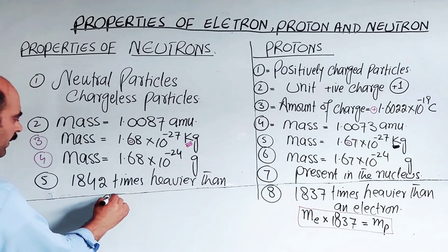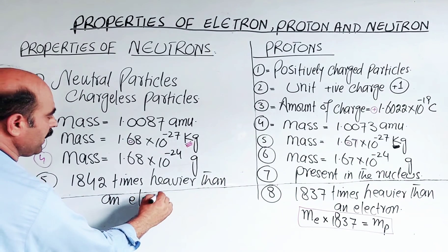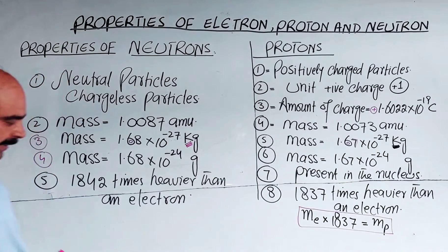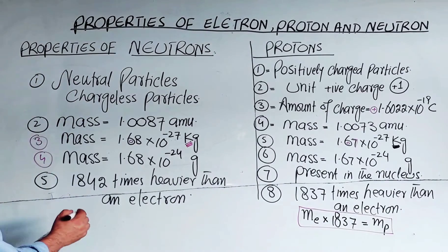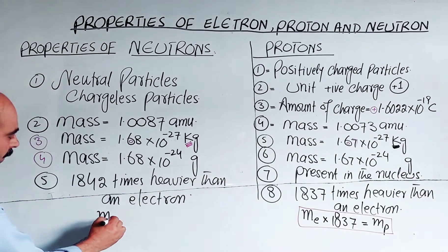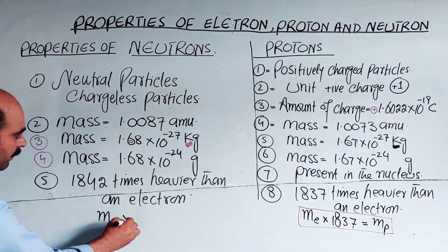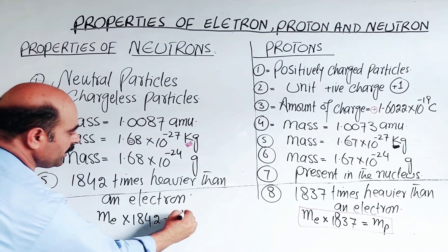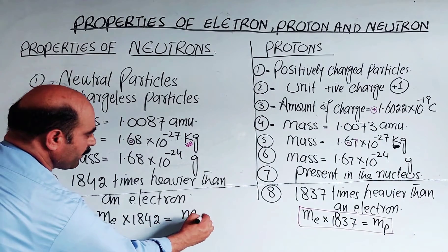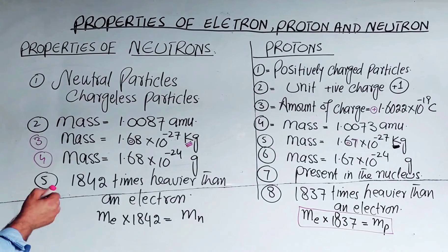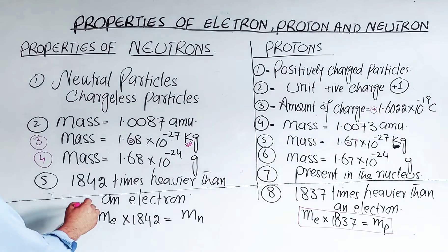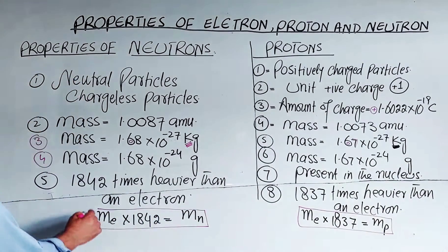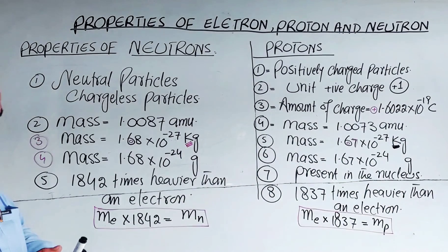The neutron is 1842 times heavier than an electron. That means the mass of electron multiplied by 1842 equals the mass of the neutron.